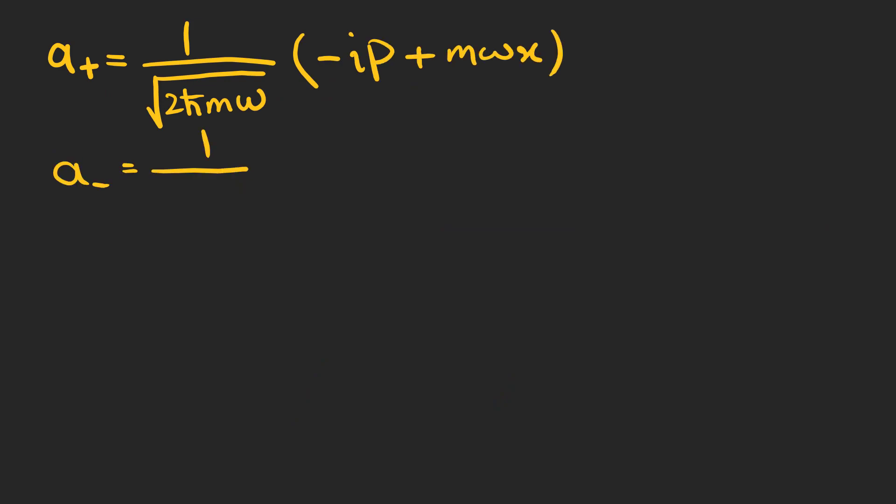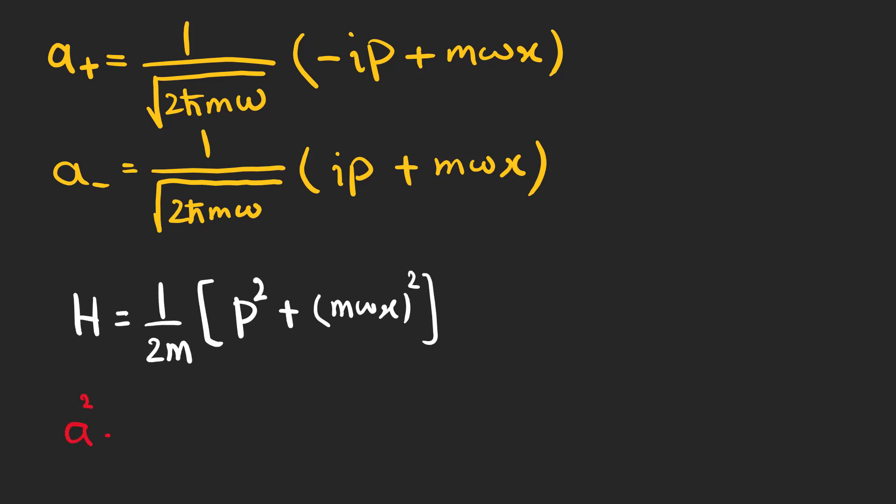Now, to solve the time-independent Schrodinger equation for the harmonic oscillator, we define these two operators. Let's take a look at the Hamiltonian. If x and p were numbers, we could simply use this expression. But they are operators and ab is not generally the same as ba.